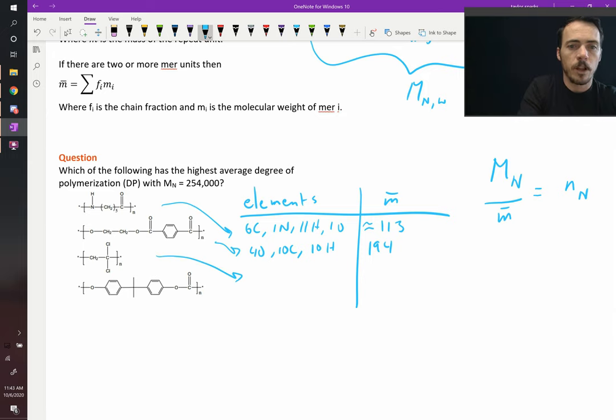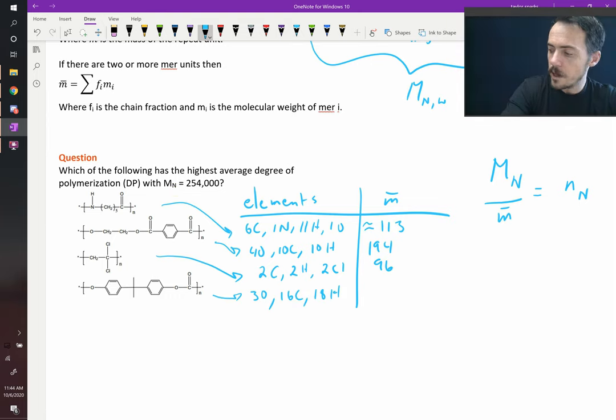What about this next one? Looks like polyvinyl chloride except it's got two chlorines instead of just one. Let's add it up. It's got two carbons, two hydrogens, two chlorines. Chlorines are heavy. They're 35 grams per mole. So this one adds up to be 96. And then the last one, I find that it has three oxygens. It's got 16 carbons and 18 hydrogens. And if we add those up, its total molecular weight would be 258 grams per mole.